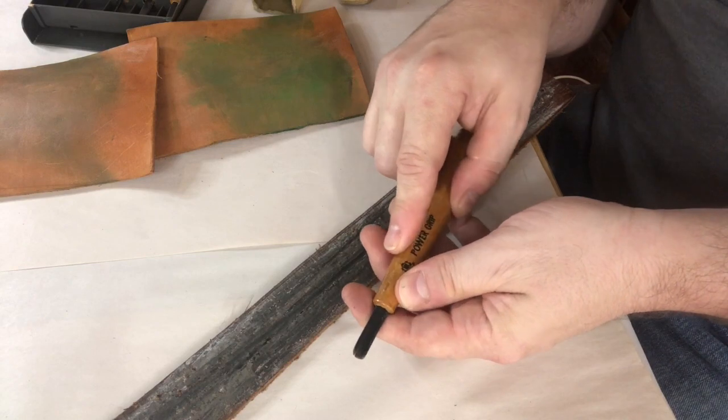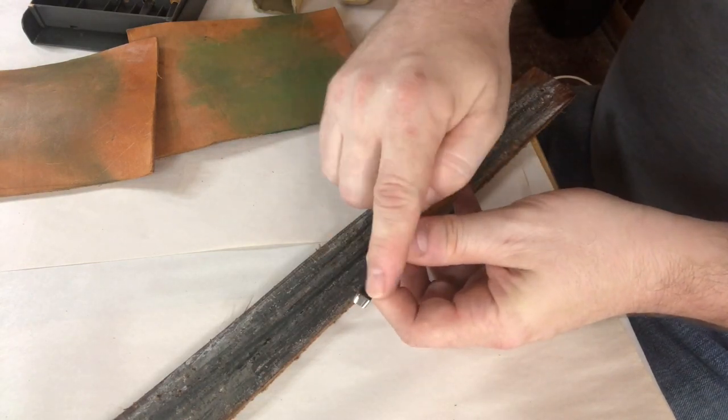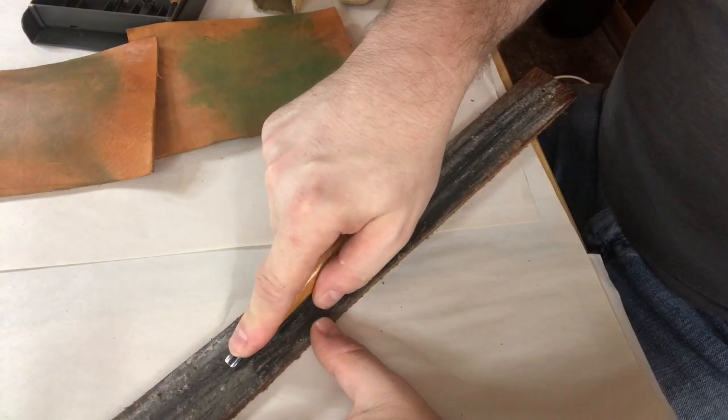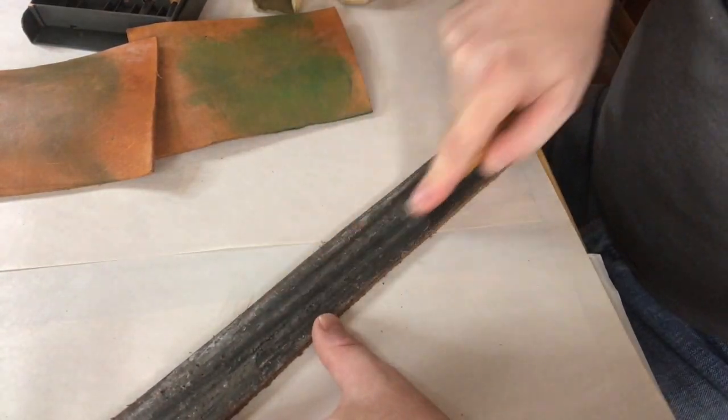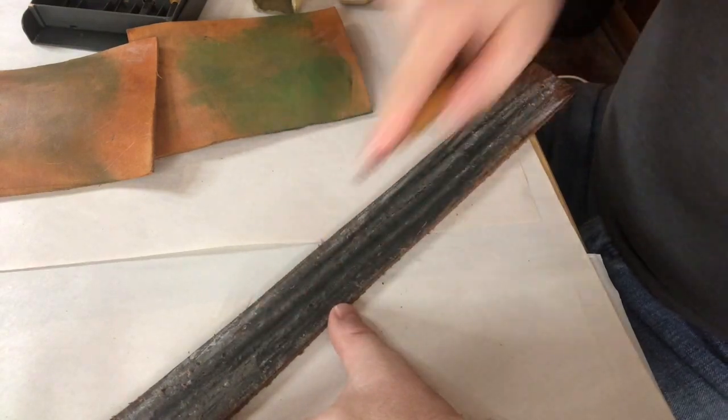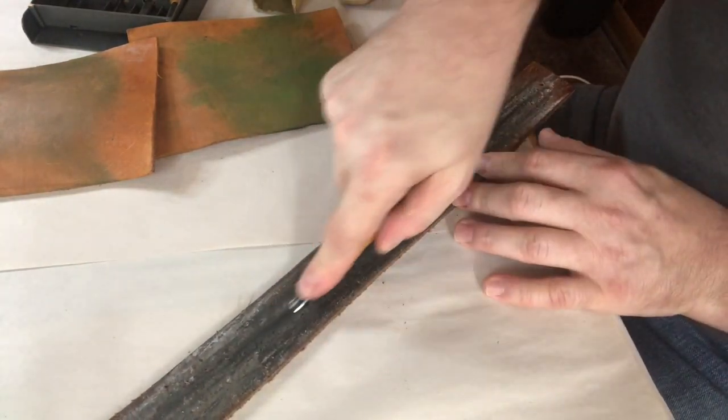Here I have a U-Gouge. All tools have one side that's sharpened. That's the polished side. You'll lay it face against the leather and just pull backwards towards yourself. Don't push forward. You'll tear up the leather.